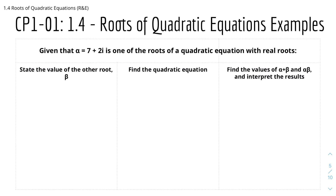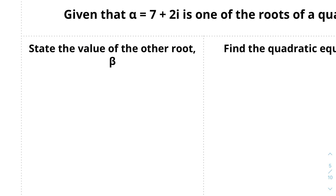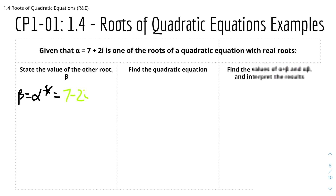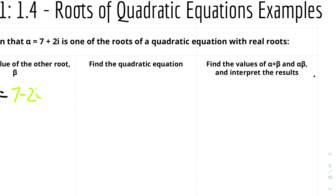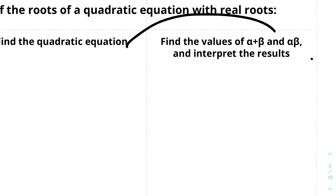Here are some more examples. Given that α = 7 + 2i is one of the roots of a quadratic equation with real coefficients, state the value of the other root β. Since complex roots occur in conjugate pairs, β equals the complex conjugate of α, which is 7 − 2i. We'll find the quadratic equation by first computing α + β and αβ, as those will help us build the equation.